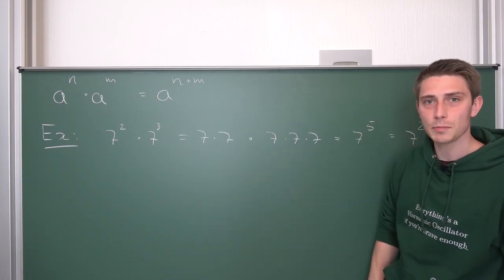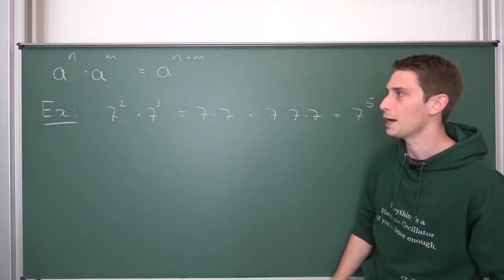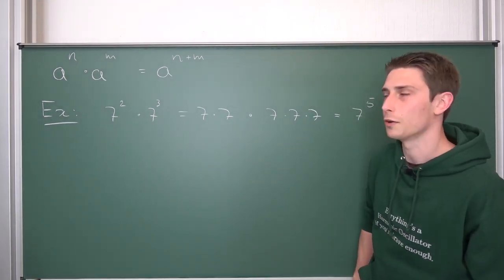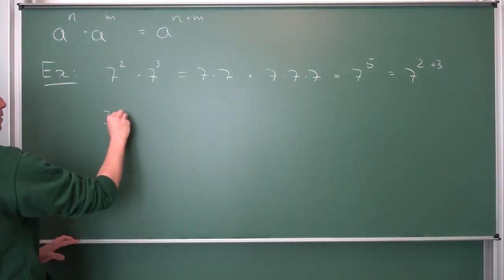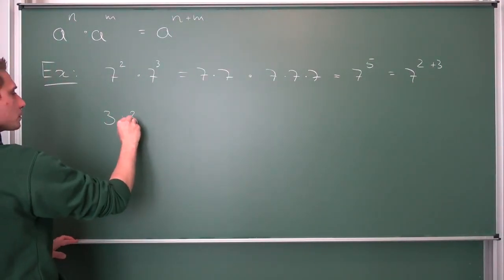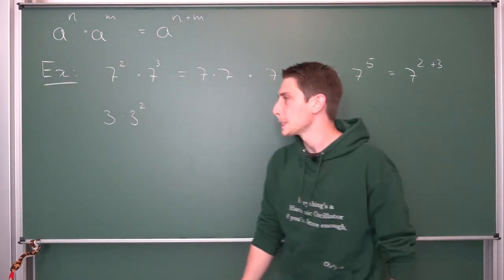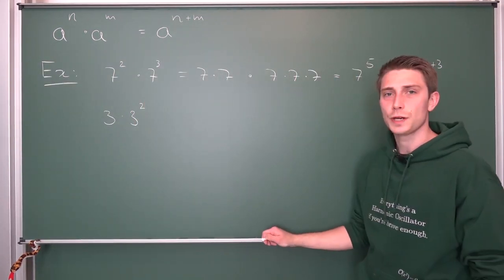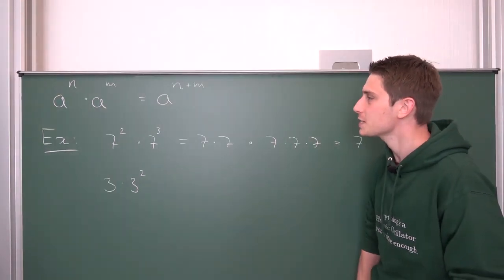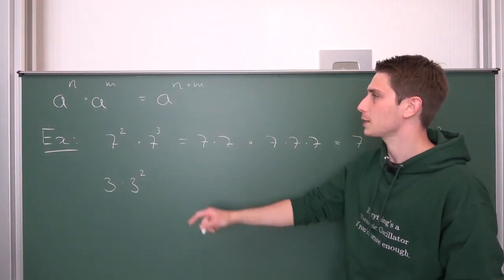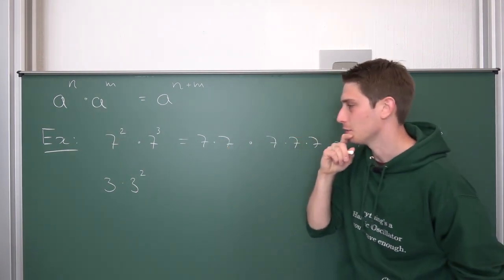Let us go through another example and see if you can wrap your head around all of this. So let us take a look at, for example, 3 times 3 squared. Hmm, that is weird — you just said that we are multiplying exponentiations together, but now there's just a 3.